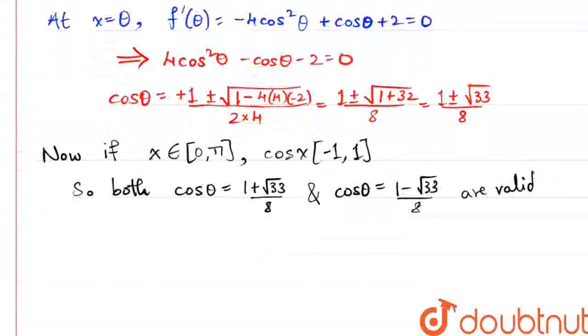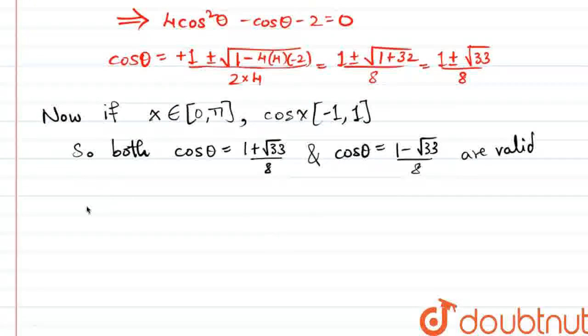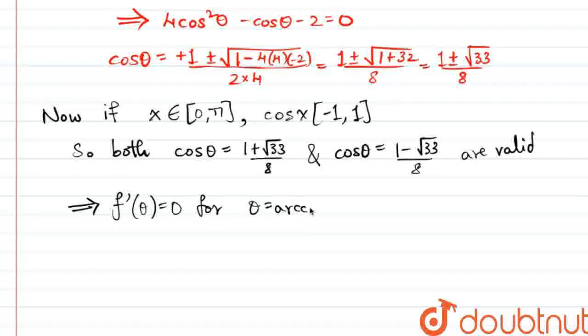They both are the points where the derivative of f is 0. That means that f dash of theta will be equal to 0 when theta is either cosine inverse of 1 plus root 33 by 8 or equal to the cosine inverse of 1 minus root 33 by 8.